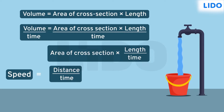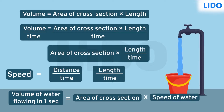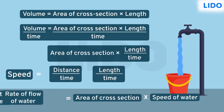In the case of flow of water through a pipe, the distance is the length of the water column. Therefore, the volume of water flowing in unit time is the product of area of cross-section times speed of the water. Volume of water in unit time is also called the rate of flow of water.